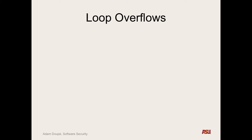On Wednesday we saw loop overflow vulnerabilities — or sorry, index overflow — where you can control the index so you can overwrite any relative address from an array. In loop overflows, we're not overflowing the loop code itself. We're controlling the loop iteration — how many times that loop iterates. And if we can do that, we can often have a security vulnerability.